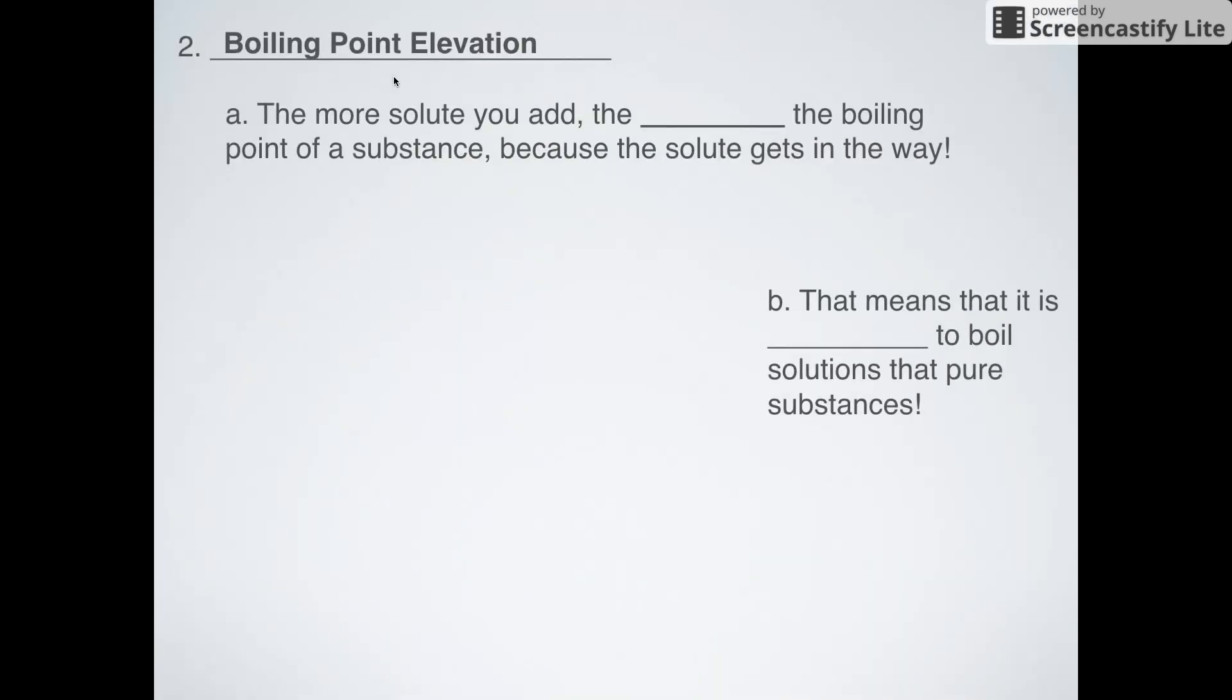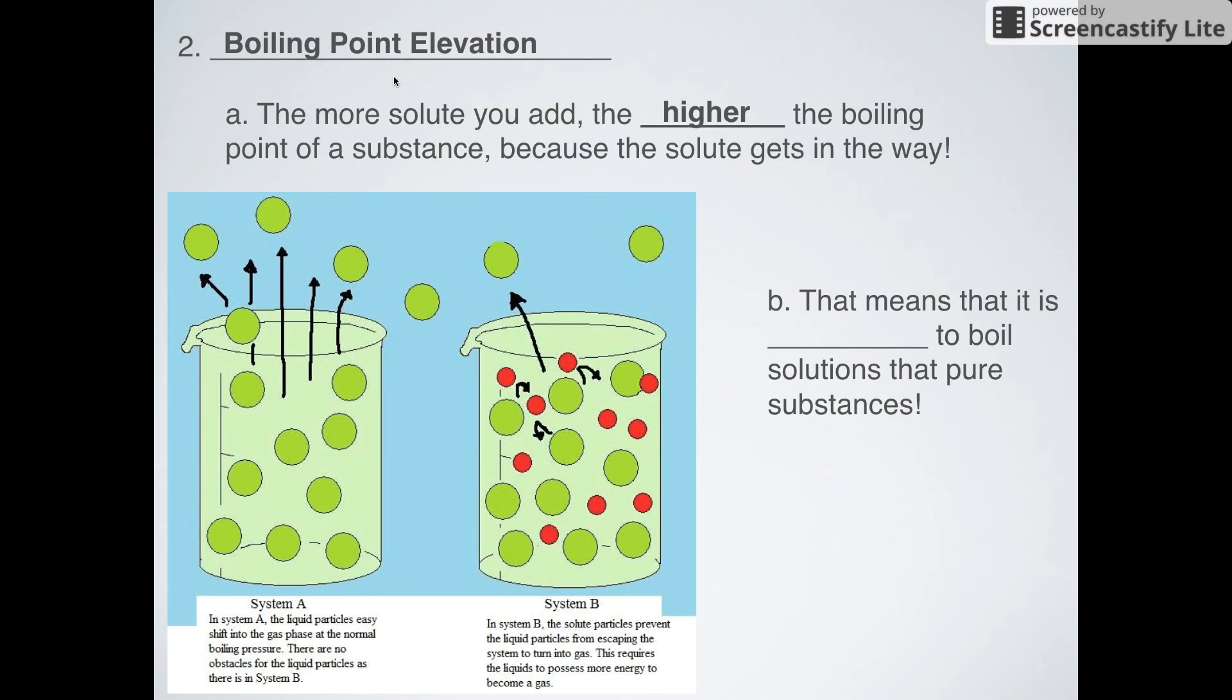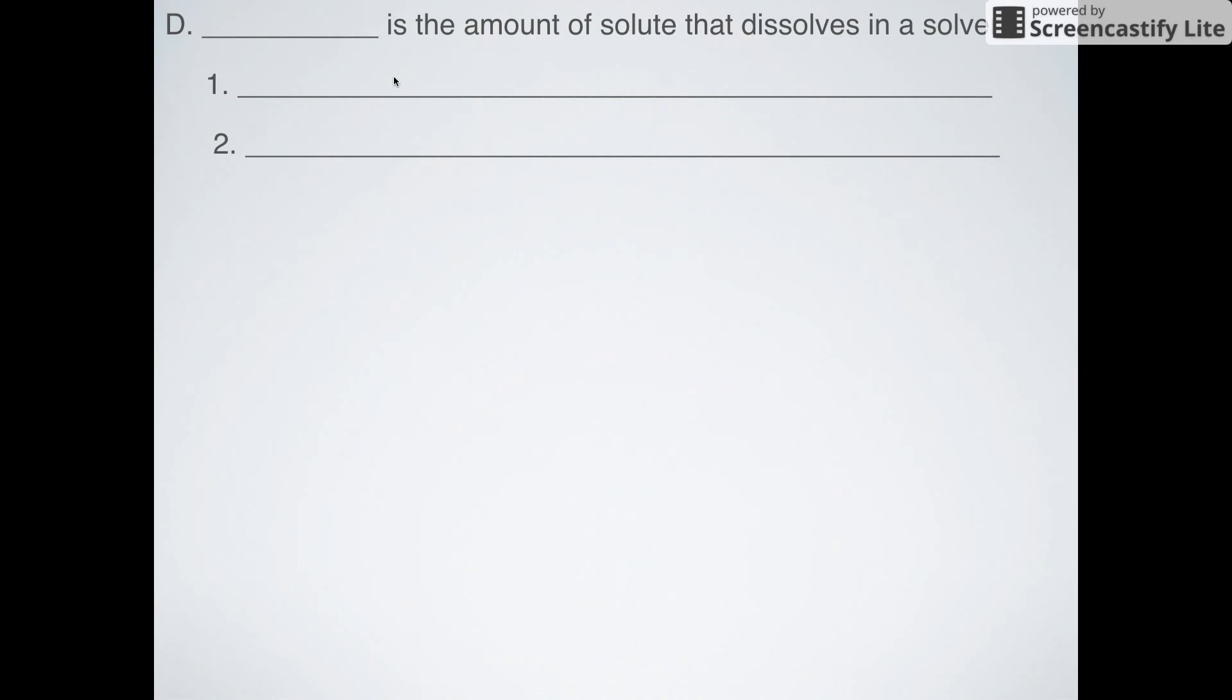Next, boiling point elevation - the exact opposite of freezing point depression. They're based on the same principle: the more solute you add, the higher the boiling point gets. Depression means lower, elevation means higher. System A would be pure water, system B would be water with solute pieces stuck inside. It's easier to boil the pure substance, harder to boil the substance with solute. If you add salt to water, it's going to be harder to boil than pure water.